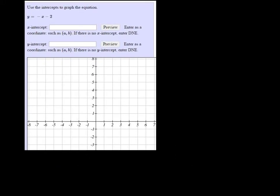To find the x-intercept, I plug 0 in for y and solve for x. So if I add 2 to both sides, I get 2 equals negative x, divide by negative 1, and then x equals negative 2. So our x-intercept is negative 2, 0.